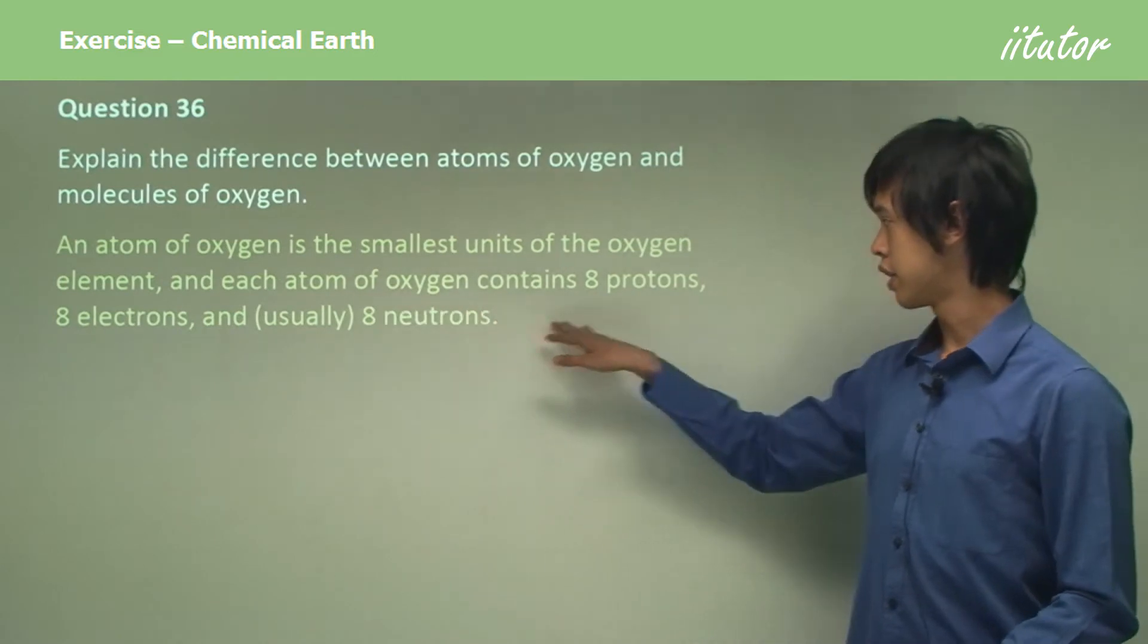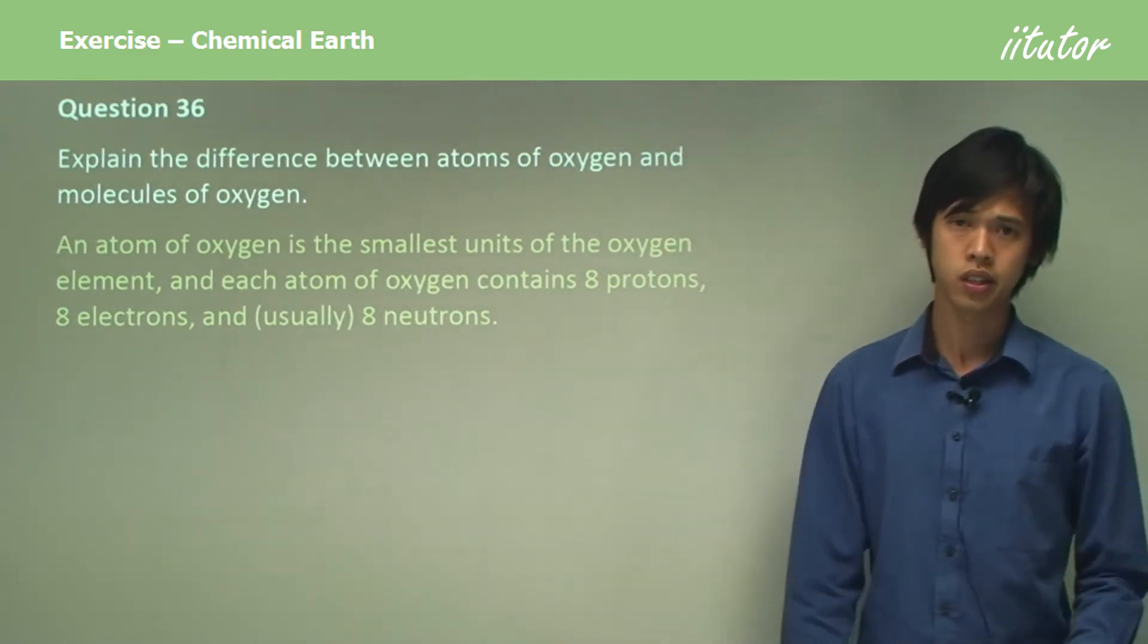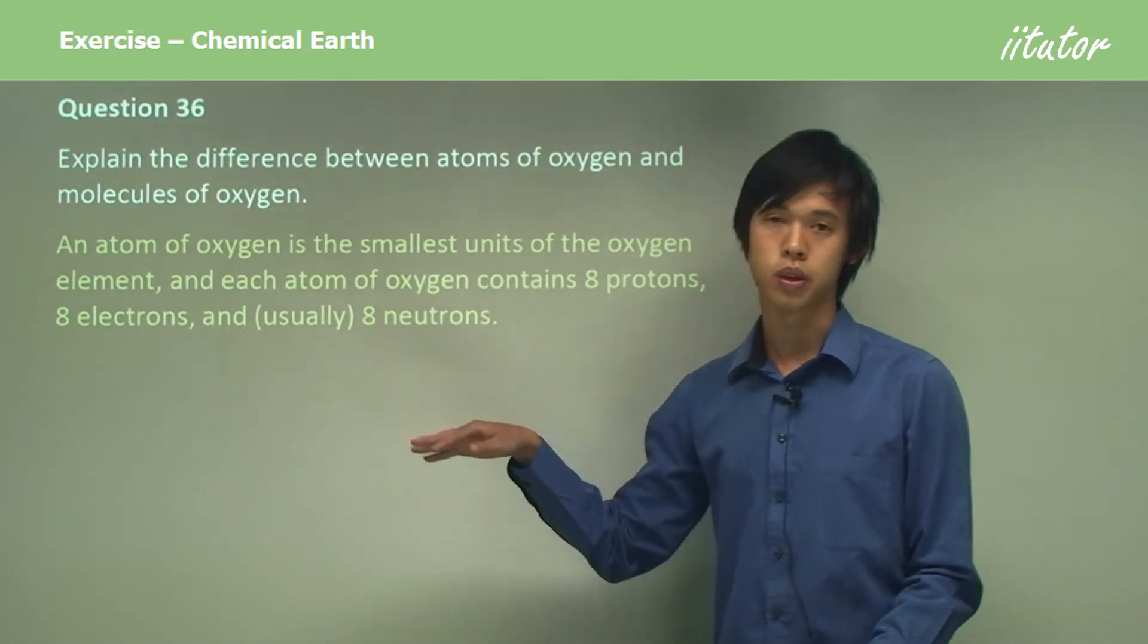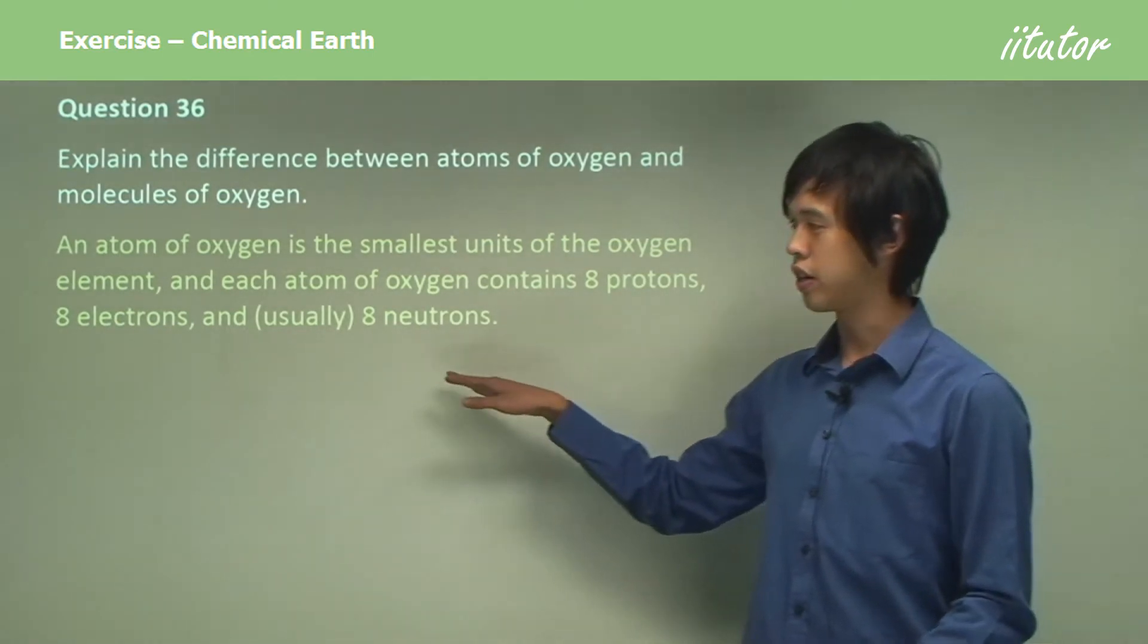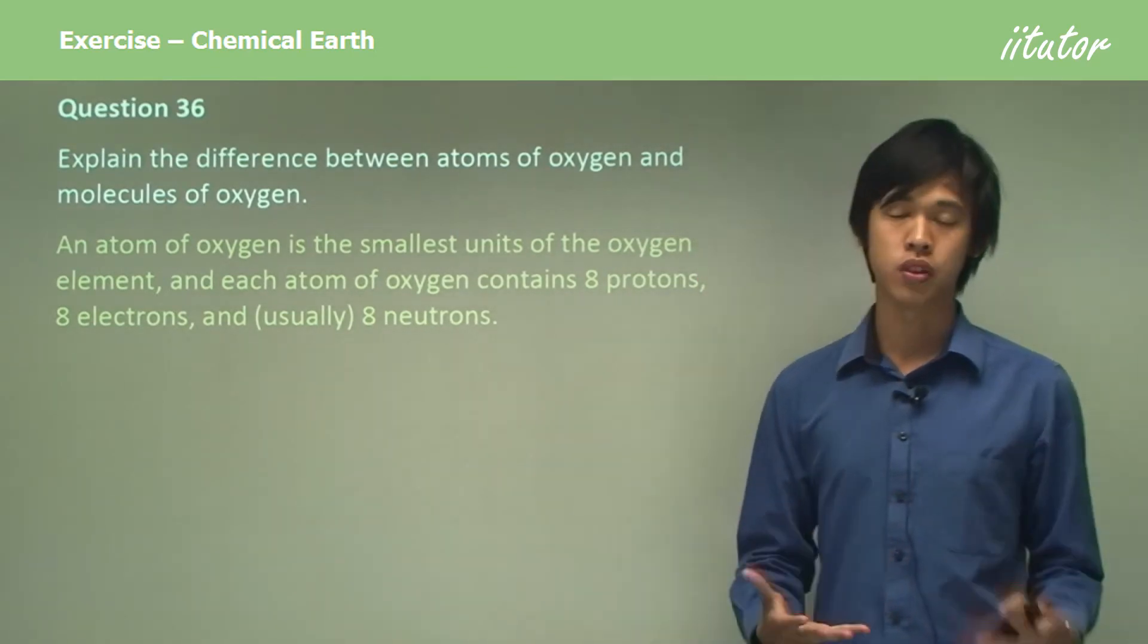Each atom of oxygen contains 8 protons, 8 electrons, and usually 8 neutrons as well. There are very few examples where this doesn't happen. So that's what an atom of oxygen is.